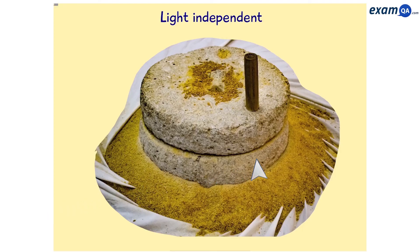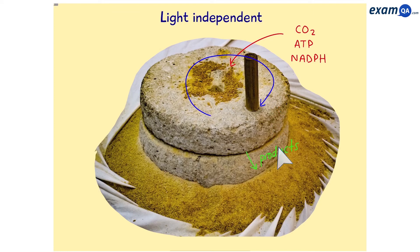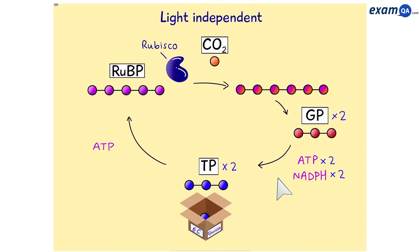So you can think of the light independent reaction like a flour grinder. You put your materials in, spin it around, and get your products. However, what would happen if we stopped putting the materials in or stopped spinning it around? Would we still get our products? Let's see what happens. So here's a common style of question.